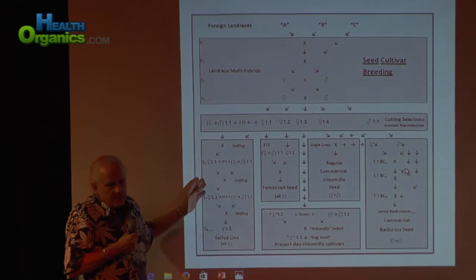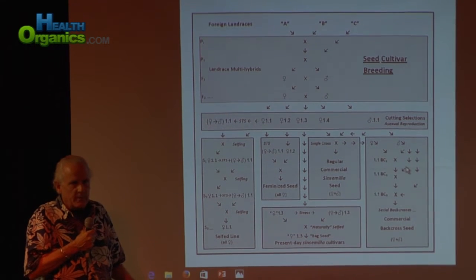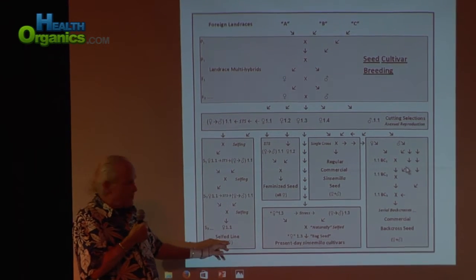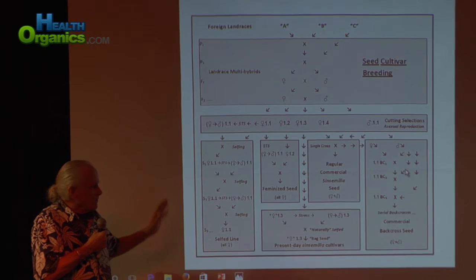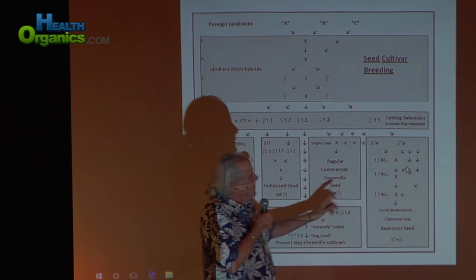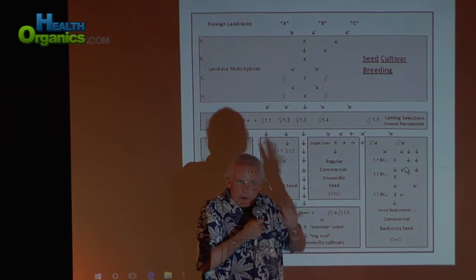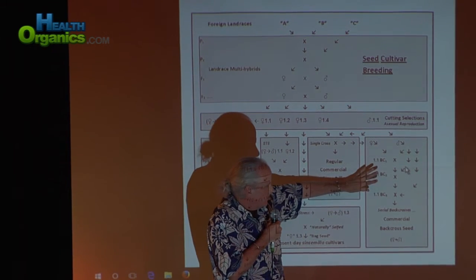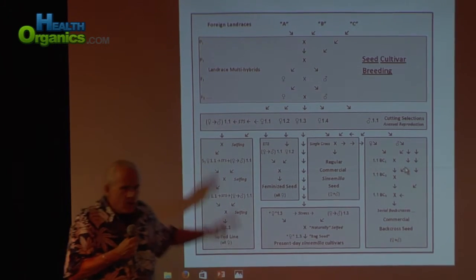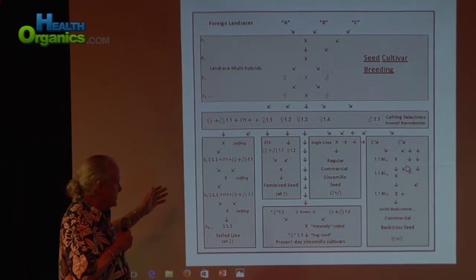Along the same lines, there's selfing — repeating the same process over and over until you've made a line more and more homozygous, also making it all female since you started with females. You can also go through serial backcrosses — another way to make things more homogeneous. You still get males and females that way. This is all classical breeding — just things that scientists and breeders do to develop all kinds of crops.